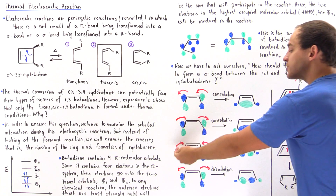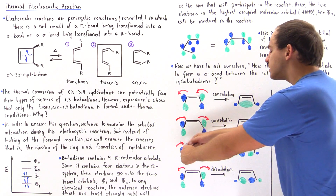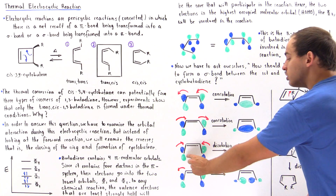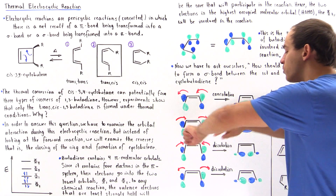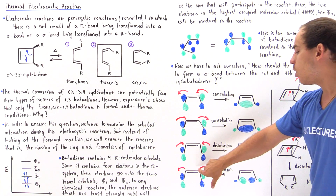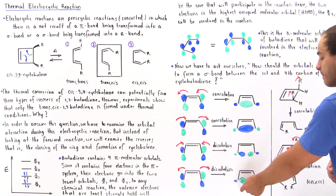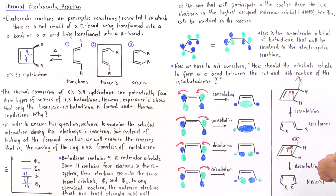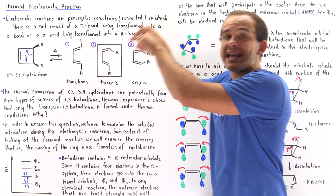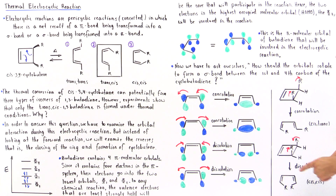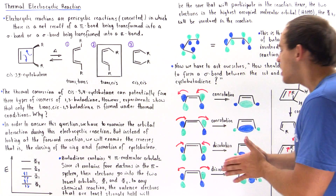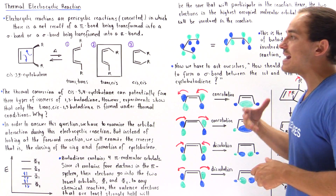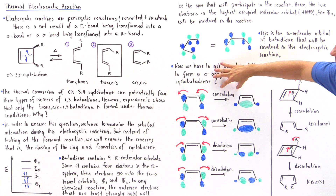What if one orbital rotates clockwise while the other rotates counterclockwise? In that case, we get a blue lobe overlapping with a green lobe — opposite phases — and no bond forms. The same is true if they rotate in opposite directions the other way. When orbitals rotate in the same direction, that is conrotation; when they rotate in opposite directions, that is disrotation. For thermal electrocyclic reactions, only conrotation actually leads to the creation of a bond.